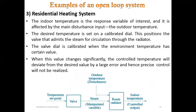A third example of an open loop system is the residential heating system. The response of interest is the indoor temperature, which is affected by the main disturbance — the outdoor temperature. The valve dial is calibrated when the environment temperature has a certain value, with no automatic correction for changes.